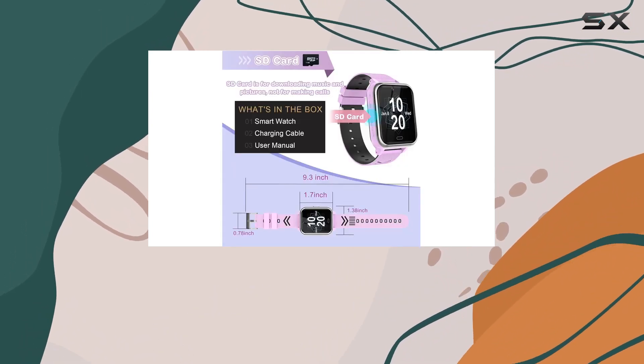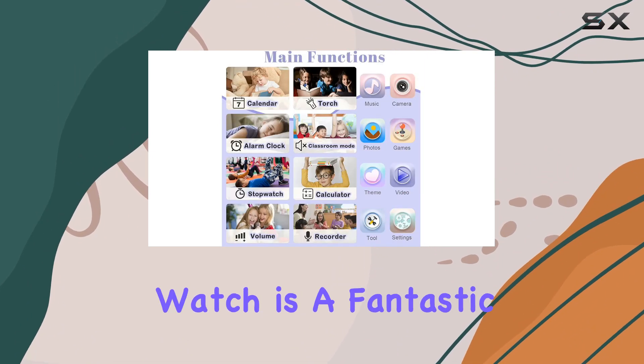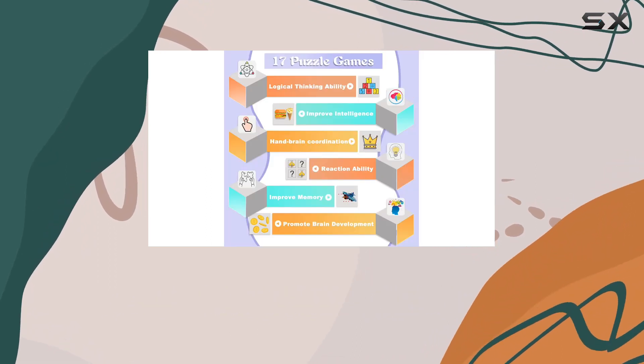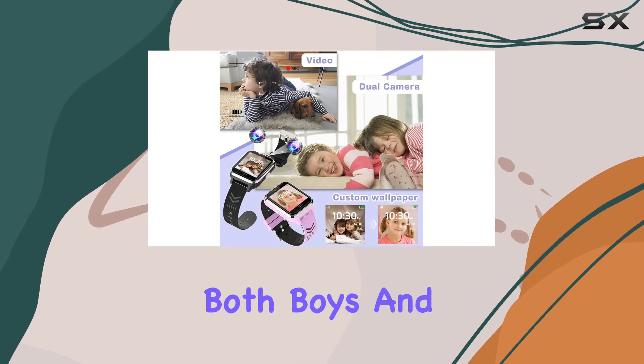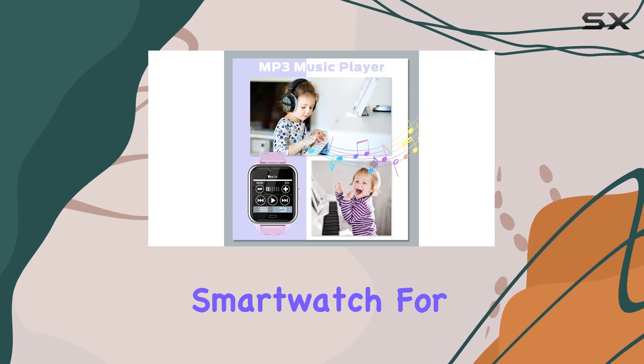In conclusion, the Igreeman Smartwatch is a fantastic gift for kids, combining entertainment and education seamlessly. With its vibrant purple color and modern design, it's sure to be a hit with both boys and girls. If you're looking for a feature-packed and easy-to-use smartwatch for your child, the Igreeman Smartwatch is worth considering.